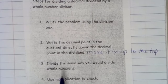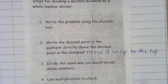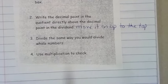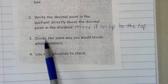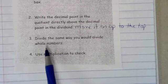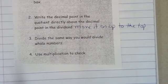And yes I want you to add that on step two right there. Step three says divide the same way you would divide whole numbers. So once you move that decimal up to the top, you ignore it, pretend like it's not even there. Number four, use multiplication to check. I don't always make you use multiplication to check, but you definitely can to make sure you got your answer correct.